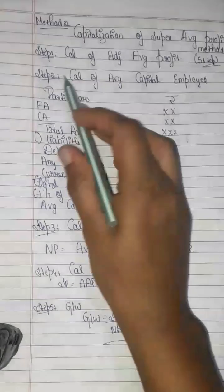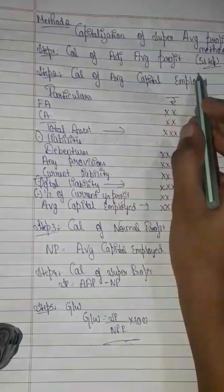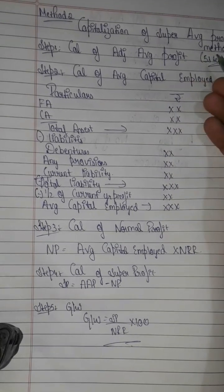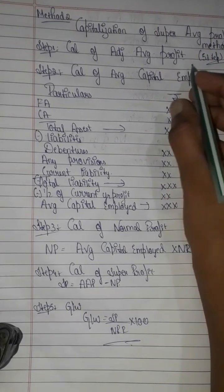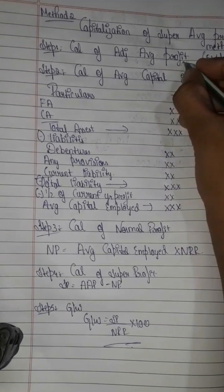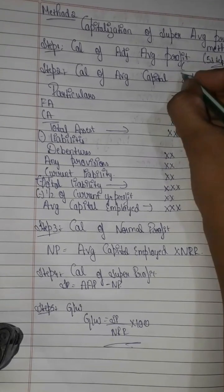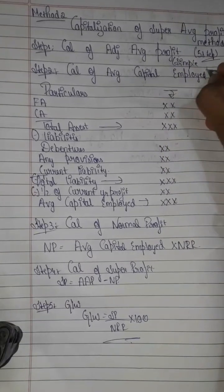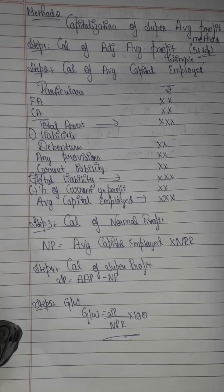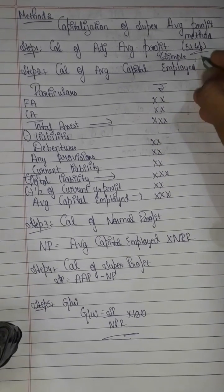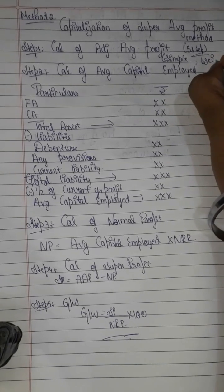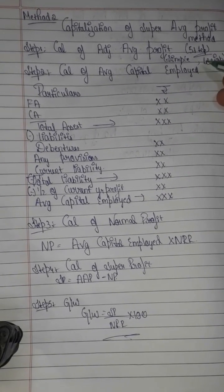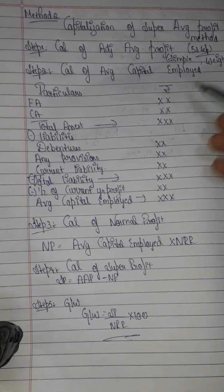In the first step, we do the calculation of adjusted average profit. If the profit fluctuates, we use the simple average method. If profit shows a trend of increase or decrease, we use the weighted average method. This is the first step: calculation of adjusted average profit.